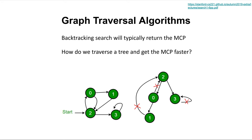Backtracking search does complete the job — we do get the minimum cost path. But the issue is it's not efficient. Backtracking search doesn't satisfy the space and time complexity that would be ideal for finding the minimum cost path. The important question is: how do we traverse a tree and get the minimum cost path faster compared to backtracking search? Let's talk about techniques on how we can traverse the tree faster.